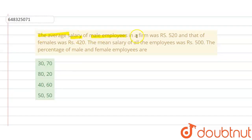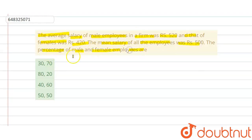In the following question, the average salary of male employees in a firm is rupees 520, that of female was rupees 420, and the mean salary of all employees was 500. Then the percentage of male and female employees are: 30-70, 80-20, 40-60, or 50-50.